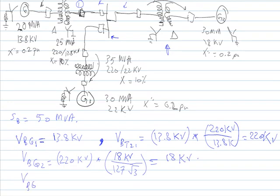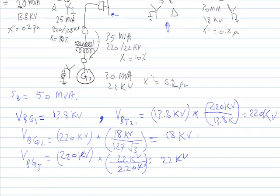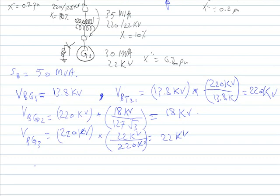The base voltage on generator bus number three is derived from the 220 kV transmission line base, divided by 220 kV on the primary, giving approximately 22 kV on the bus of generator number three. Now we will find the per-unit reactance of each component in this system.